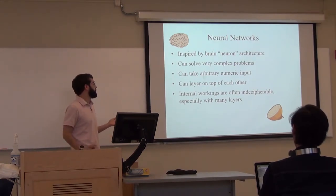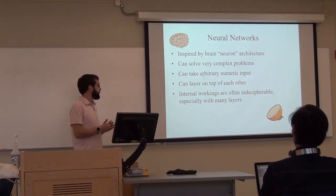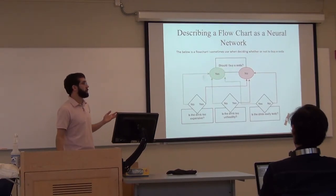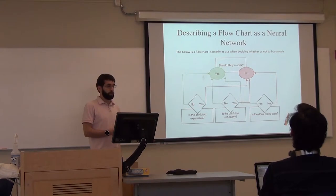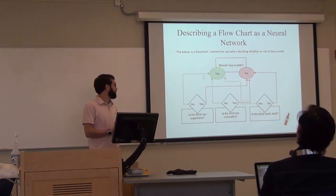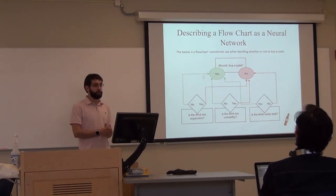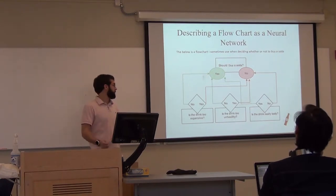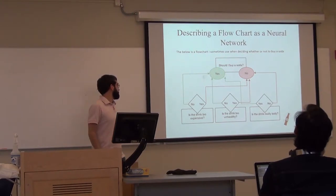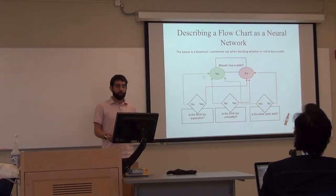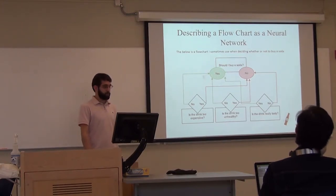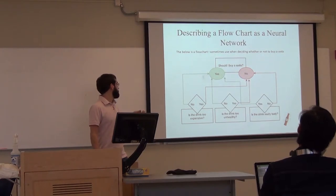But for this application, it's fine because we're not concerned with how exactly it works. I will give you a toy example of a very simple type of neural network. The problem that I often have is, should I buy it? When I'm buying a drink, there are three questions that I ask myself. One, is the drink too expensive? Two, is it too unhealthy? And three, is it really tasty? If it's expensive, I'm less likely to buy it. If it's unhealthy, less likely. And if it's tasty, I'm more likely. I can sort of simplify this by describing it as a flow chart with a point system.